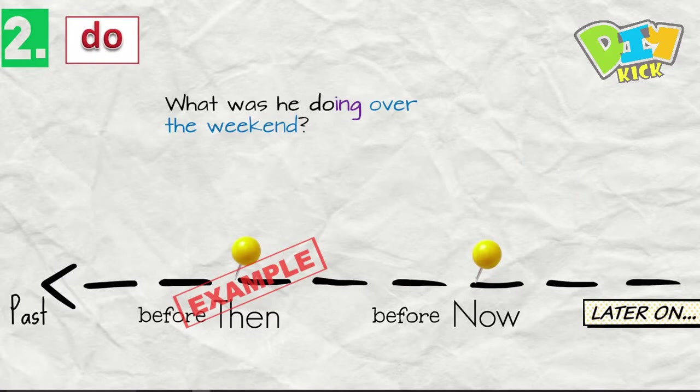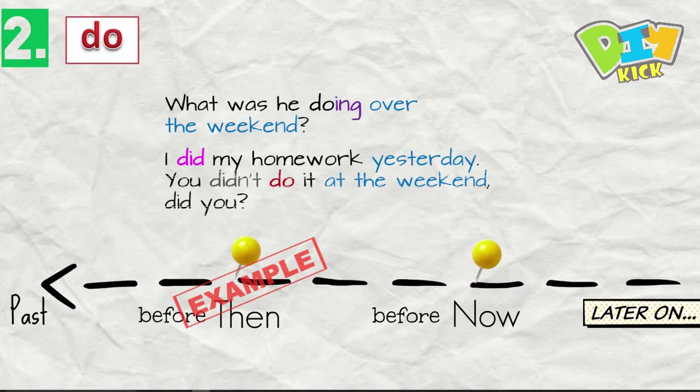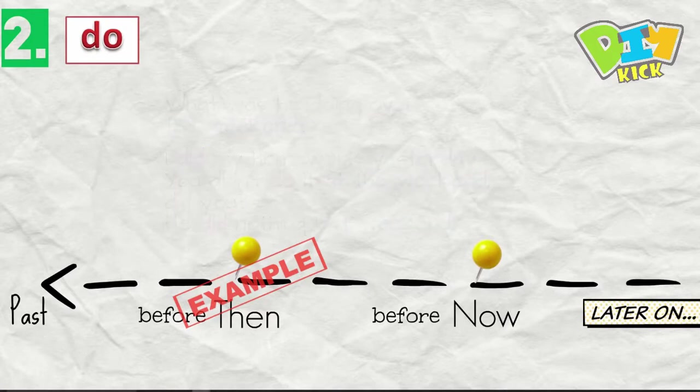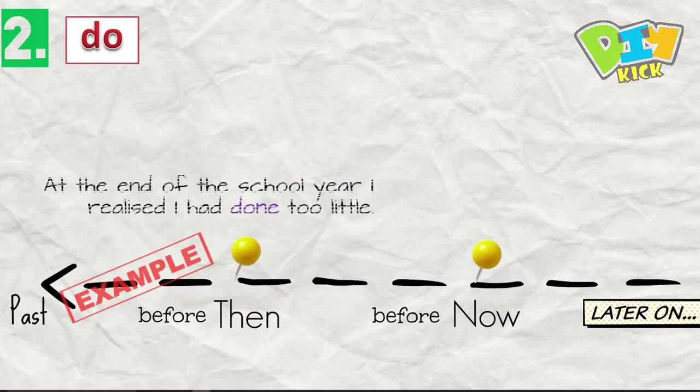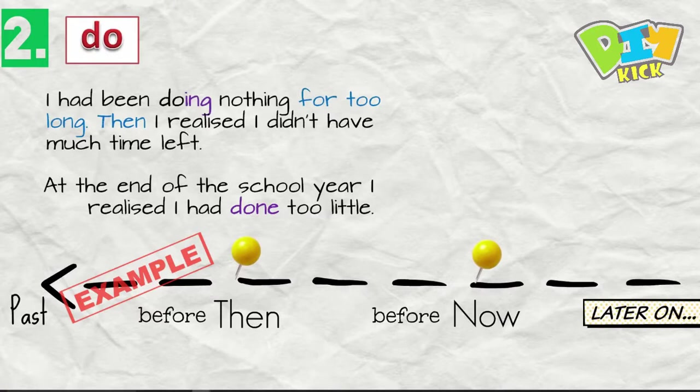I've been doing nothing with my English for years. What was he doing over the weekend? I did my homework yesterday. You didn't do it at the weekend, did you? He did nothing last weekend. And before then, examples. At the end of the school year, I realized I had done too little. I had been doing nothing for too long. Then I realized I didn't have much time left.